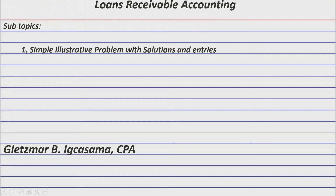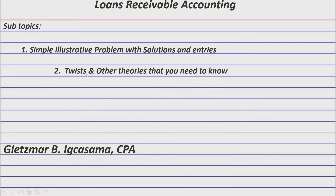Here are the subtopics that we're going to talk about. In this current series, we're going to start immediately with a relatable illustrative problem. Based on that problem, we're going to make solutions and journal entries immediately. And then I will try to twist the illustrative problem to emphasize more things. We are also going to talk about some theories that you need to know based on IAS or International Accounting Standards or IFRS standards.